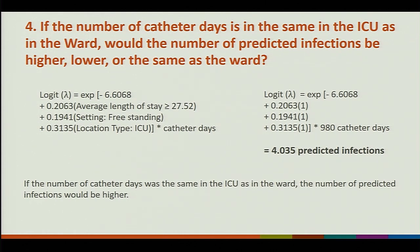Question four: if the number of catheter days is the same in the ICU as in the ward, would the number of predicted infections be higher, lower, or the same as the ward? You run the same equation and should get 4.035 predicted infections. So if the catheter days were the same as in the ward, the number of predicted infections in the ICU would be higher. This question was meant to illustrate that if your location changes in your LTAC — for example, from an ICU to a ward — you would not get the same predicted number of infections. If you divide 5 by 4.035, you would get a smaller SIR score.